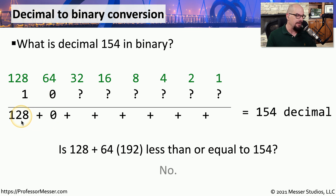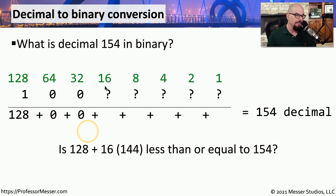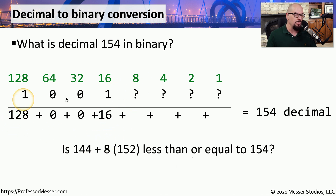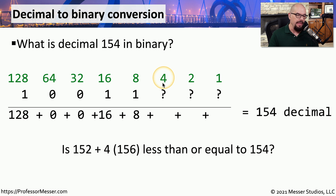Now let's try 32. 128 plus 32 is 160 — is 160 less than or equal to 154? It isn't, so we put a 0 in that slot. Now we move to 16. Is 128 plus 16, which is 144, less than or equal to 154? It is, so we put a 1 and bring down the 16. Next is 8. 144 plus 8 is 152 — that is less than or equal to 154, so we put a 1 and bring down the 8. Now we're up to 152. Adding 4 gives 156 — that is not less than or equal to 154, so we put a 0 in the slot with the 4.